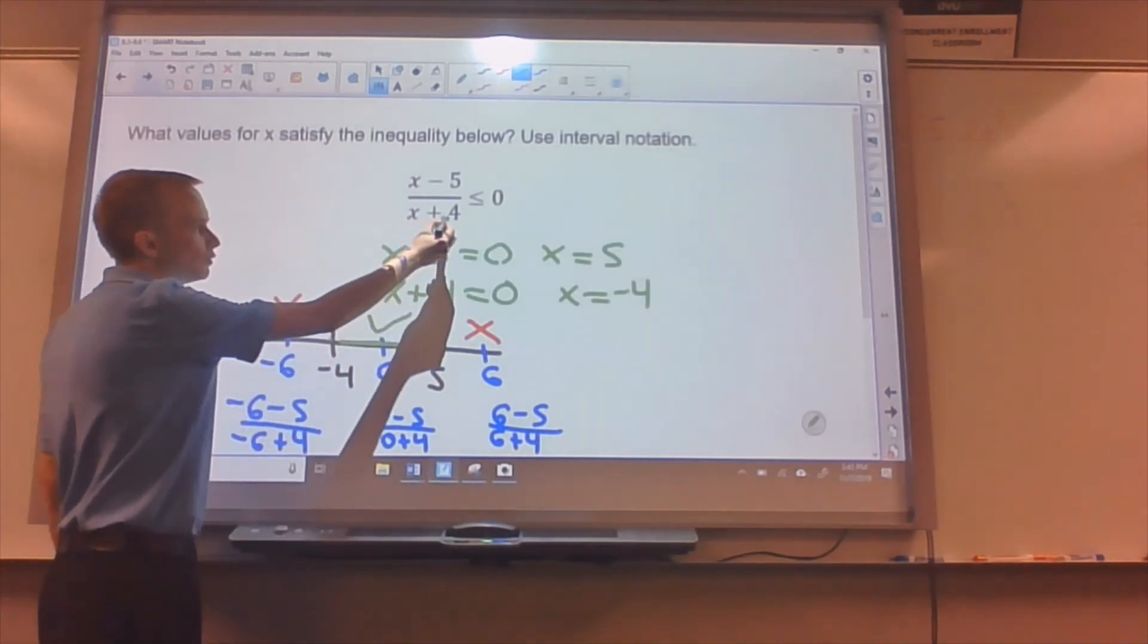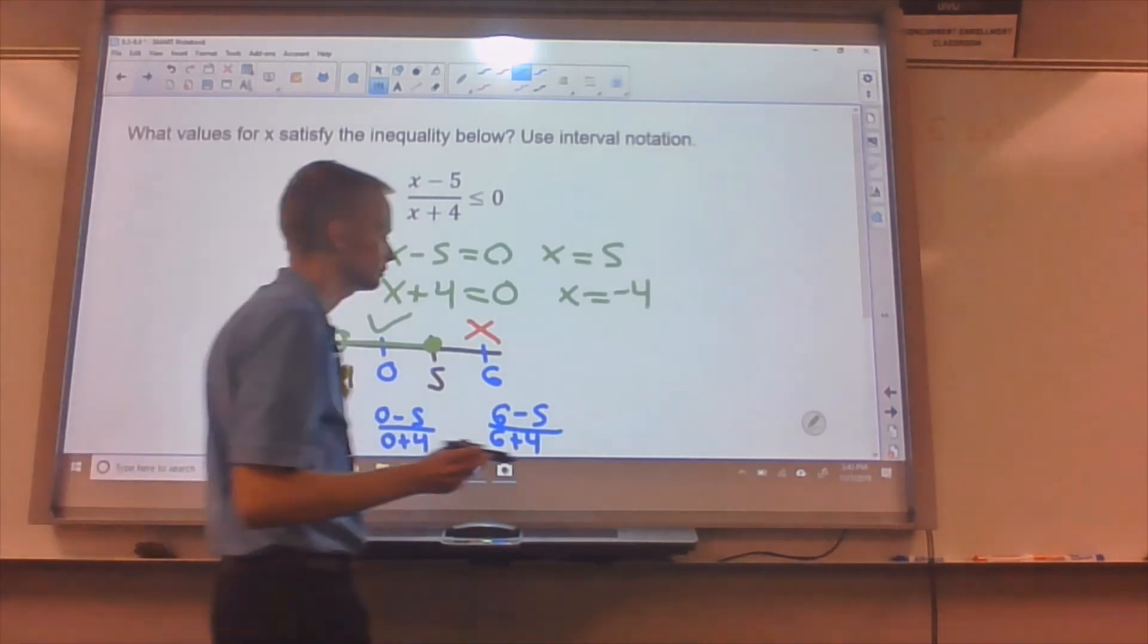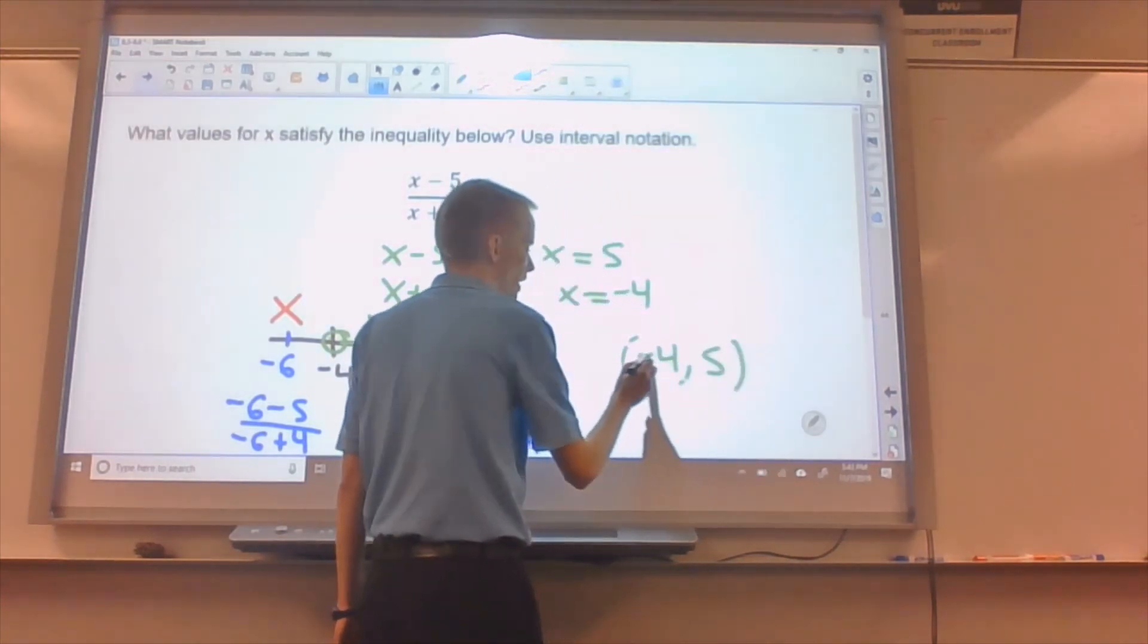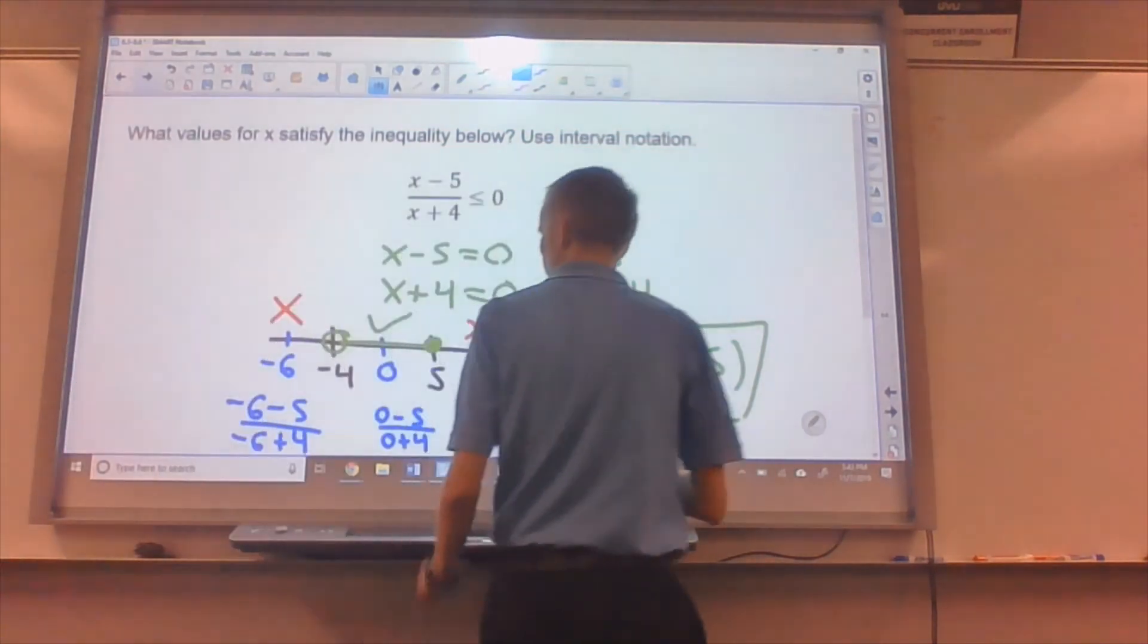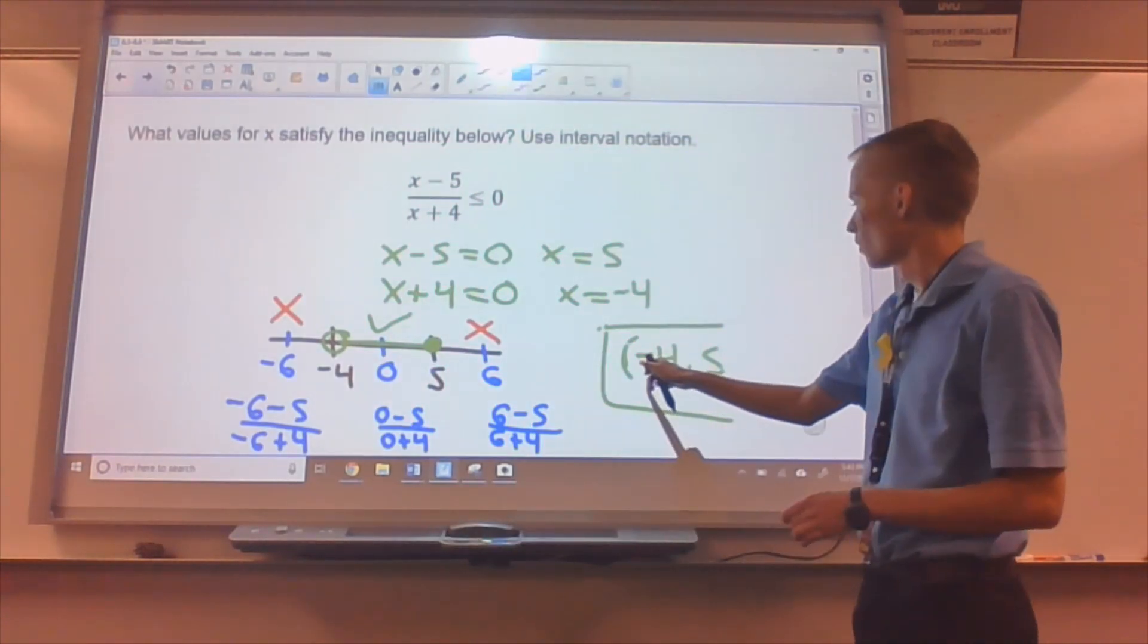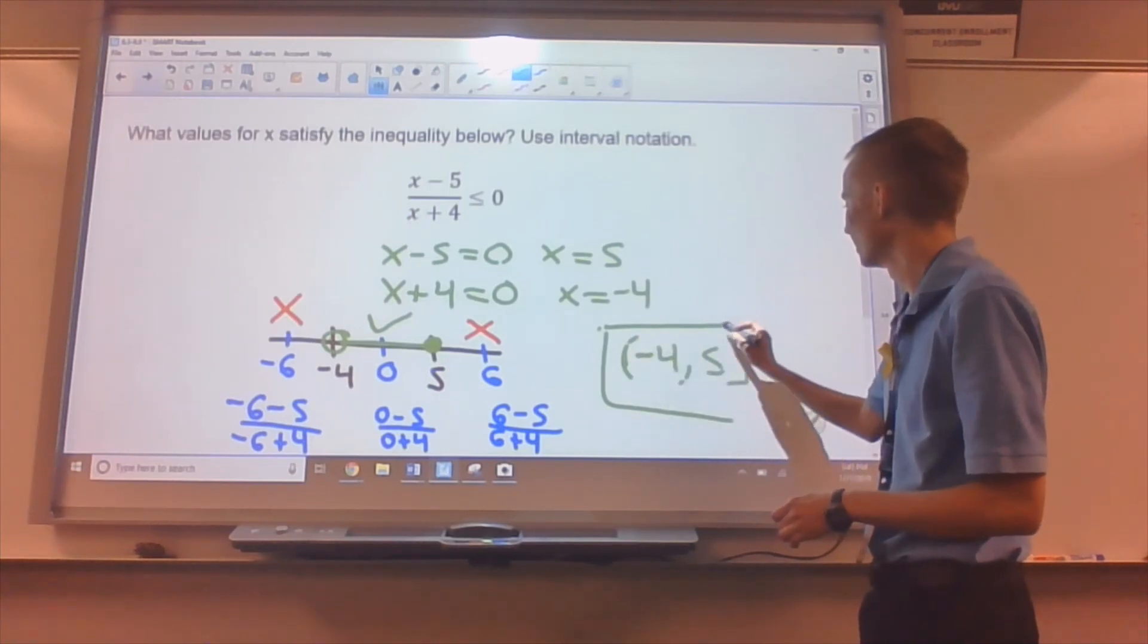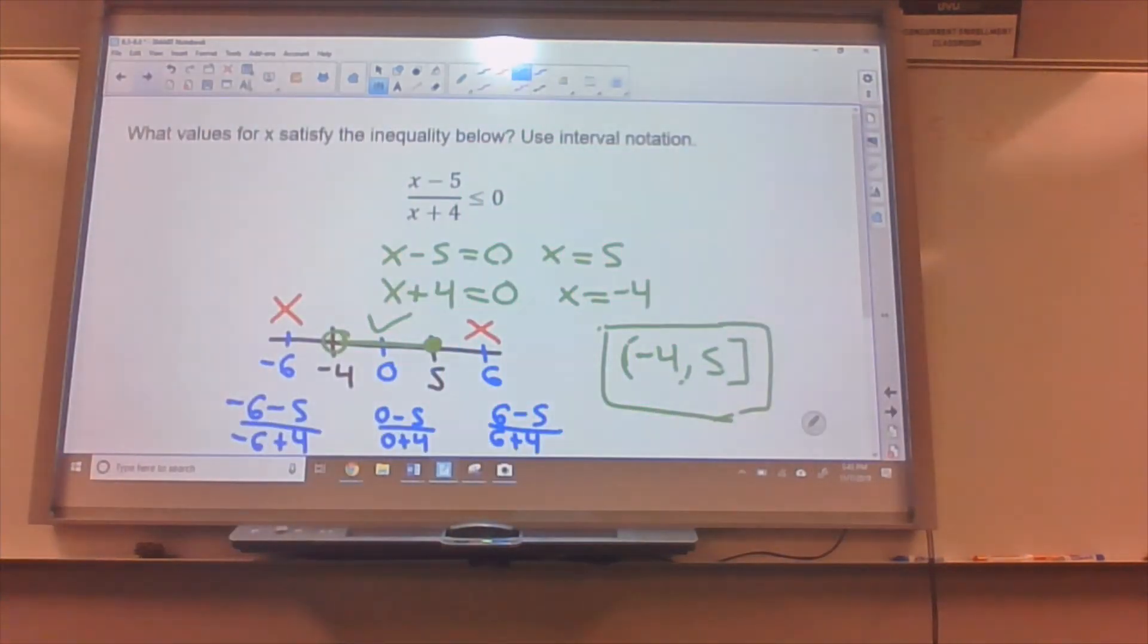But when I do negative four, I'm going to be dividing by zero. And that's a problem. That doesn't make any sense. So it doesn't work at negative four. So our interval is from negative four to positive five is our final answer. Oops, sorry. Including, trying to make sure you're awake. We're not including negative four, so my parenthesis is there. And then, we are including positive five, so my bracket is positive five.